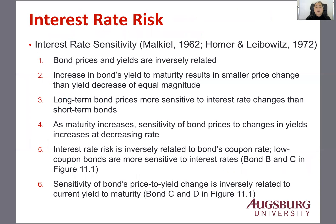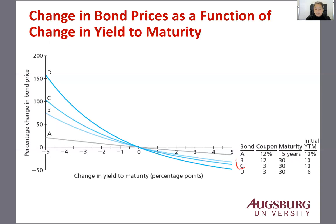Number five: interest rate risk is inversely related to the bond coupon rate, which means low coupon bonds are more sensitive to interest rate changes. Comparing B and C, which are the same except for coupon rate — B is high coupon and C is low coupon — C is more sensitive, confirming that low coupon bonds are more sensitive.